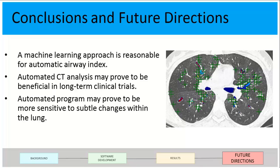In conclusion, machine learning for automated airway analysis was positive and encouraging and should be used in the future. Automated CT analysis may also be useful for long-term clinical trials. Right now they have to depend on one person sticking with the trial the entire time — which could be two months or three years — putting a lot of pressure on that person to consistently score the same way. An automated program would be consistent, objective, and produce the same type of scoring over and over again.